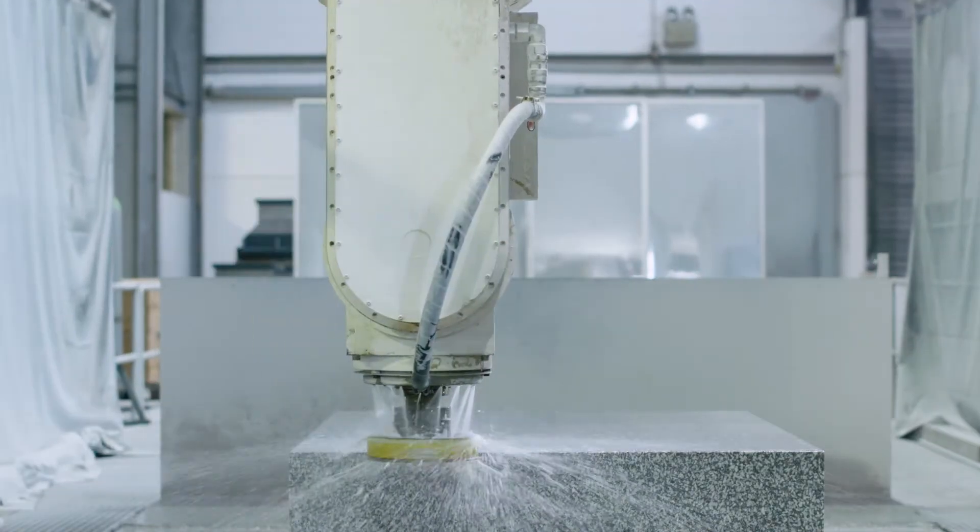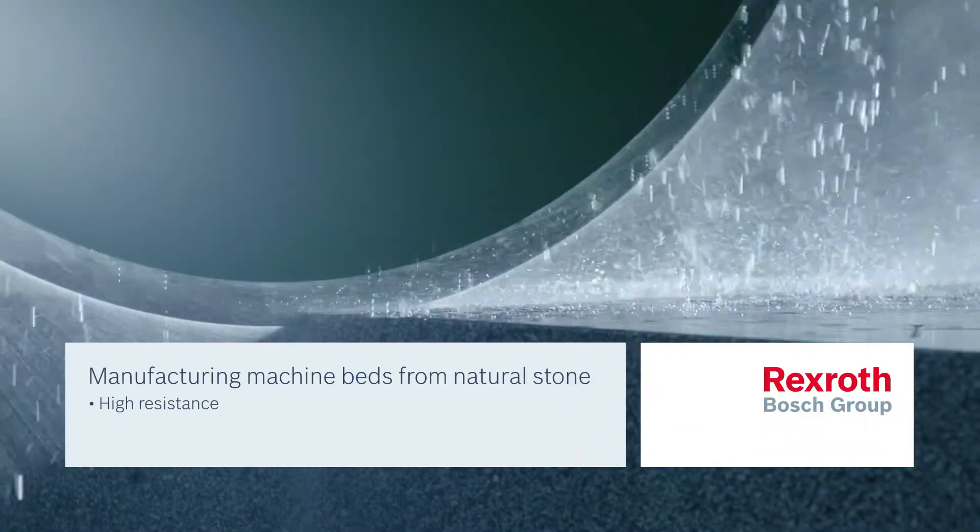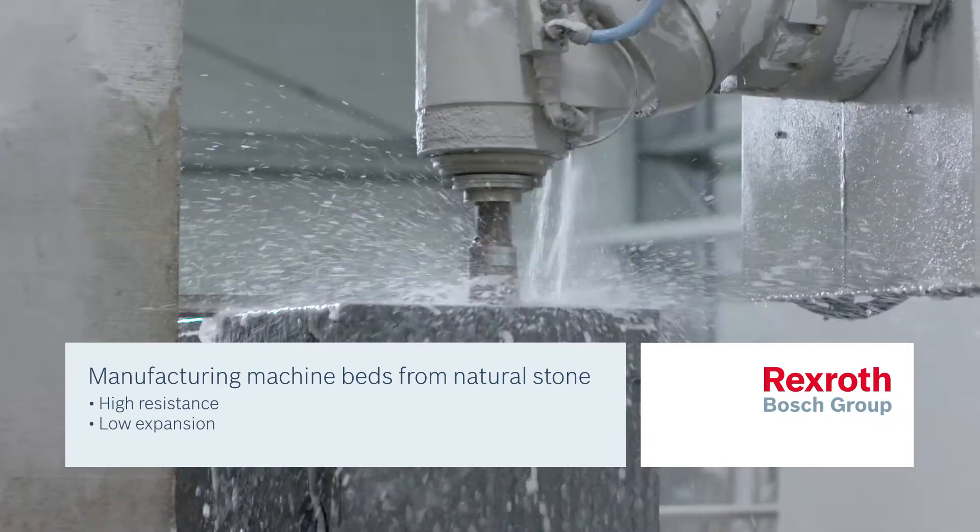We have been in the business of precise machining of natural stone for 30 years now. Natural hard stone has significant advantages over gray cast iron or steel and aluminum. We produce high precision machines for processing lenses for telescopes, for grinding gear wheels, or for circuit board drilling machines.